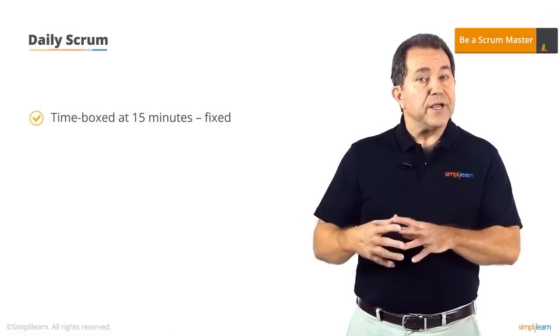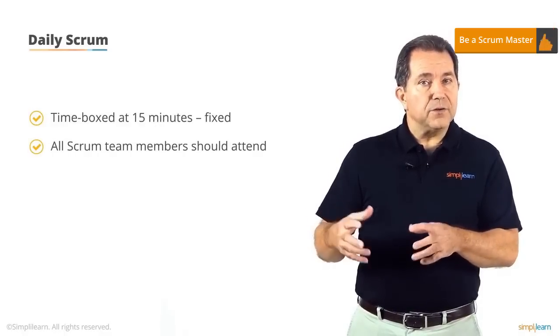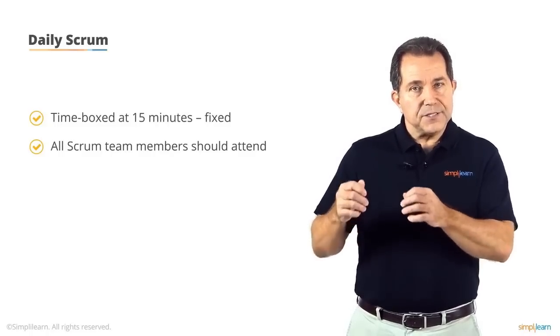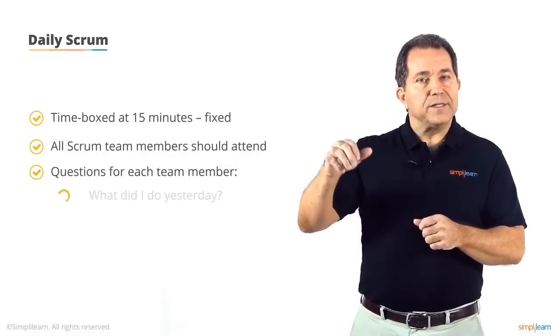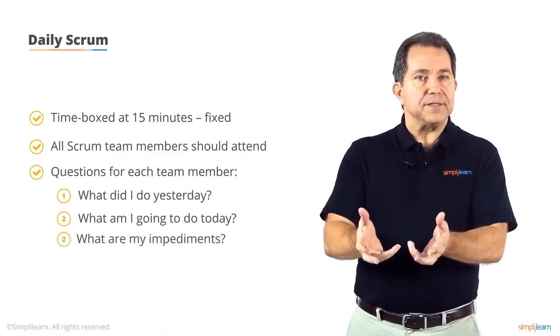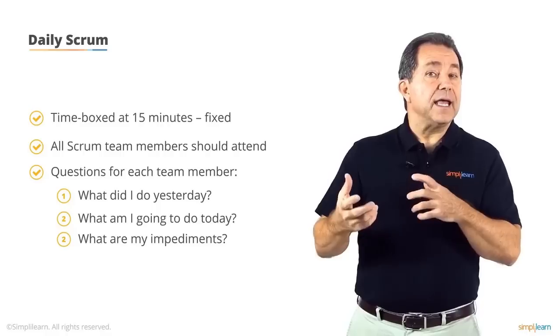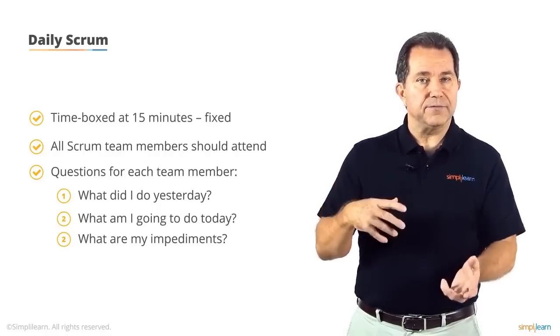The Daily Scrum is time-boxed at 15 minutes, regardless of the sprint length. The entire Scrum team, including all roles, should attend. Each development team member individually answers three questions: What did I do yesterday? What am I going to do today? And what are my impediments? This is how team members coordinate their work, and the Scrum master learns of the impediments he or she should be addressing.